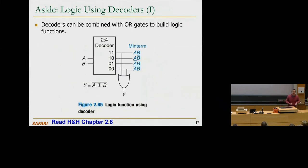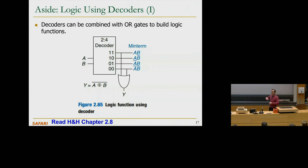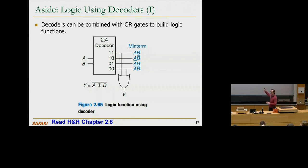A decoder can similarly be used as a lookup table. You can combine a decoder with OR gates to build logic functions — this is similar to a programmable logic array. For example, for XNOR of A and B, you use a 2-to-4 decoder with A and B as inputs to get all the minterms, then pick the minterms corresponding to XNOR — which are AB and A'B' — and OR them together.